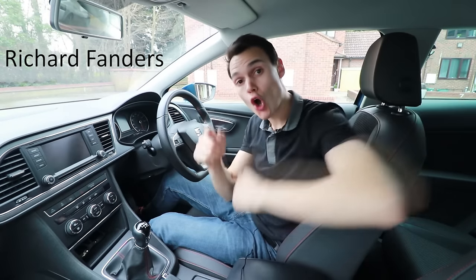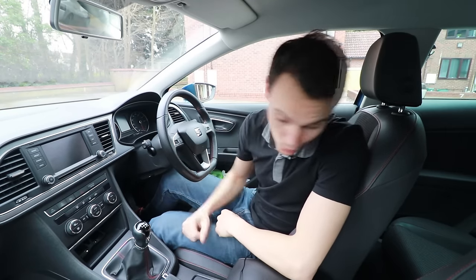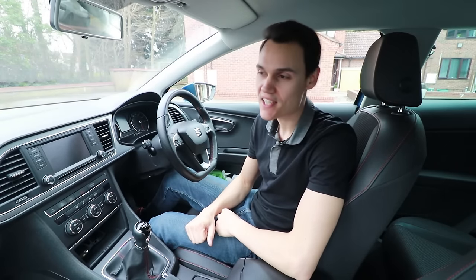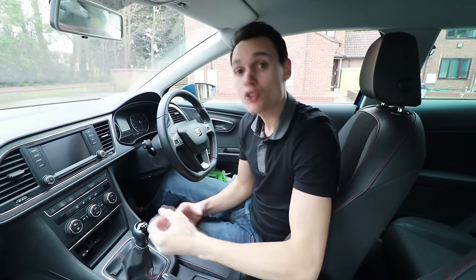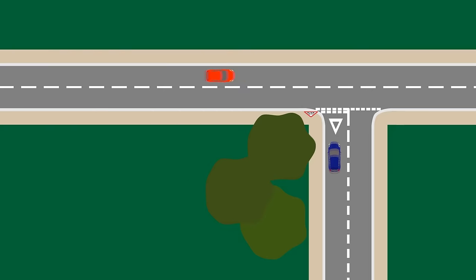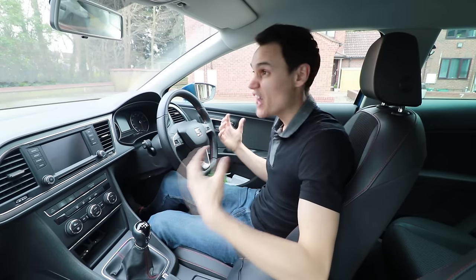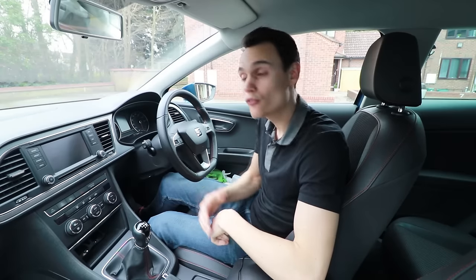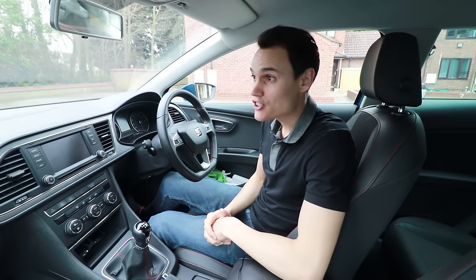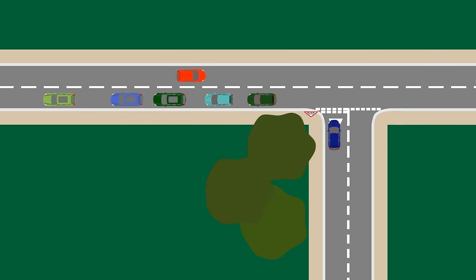Here are the 10 most common reasons why people fail the UK driving test. Number one, which is normally number one most years, is observations at junctions. If you fail because of observations at junctions, that basically means you haven't taken enough care to look to see who's coming before you've gone. Normally this happens because you're coming into the junction too fast and you haven't given yourself enough time to look left or right, or it could be that the junction has poor visibility.